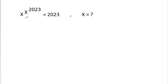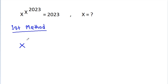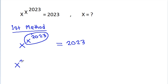In this video, we have given that x^(x^2023) = 2023, and we need to find x. First method: we have x^(x^2023) = 2023. Suppose x^2023 = y.